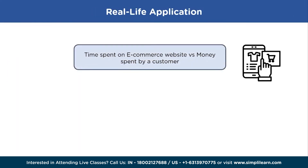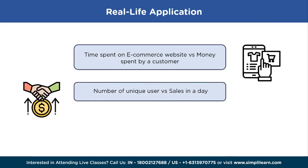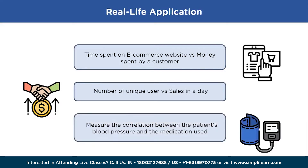Now let's see some real-life applications of correlation. For an e-commerce company accessed by millions of users, the company can measure how much time was spent by the customer and the respective money spent. We can also predict the unique users that visited the website and how it affected sales in a day. Another application is patient blood pressure and medication — the level of blood pressure and the effect of medication on it can be in correlation.